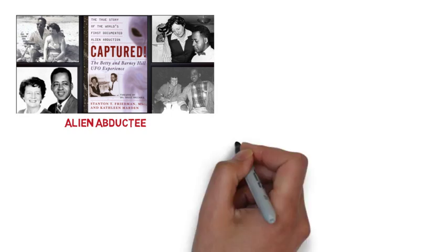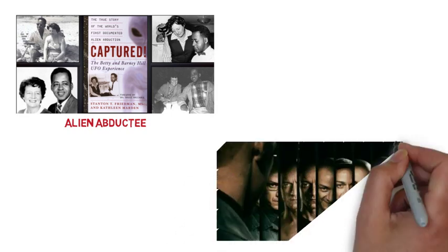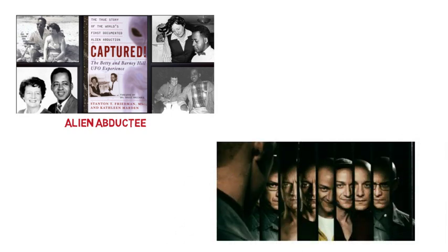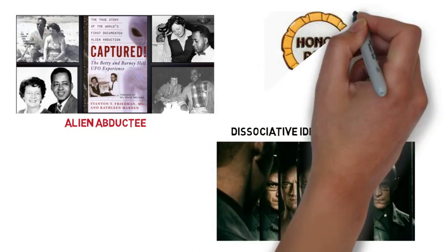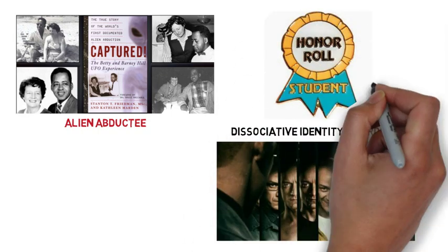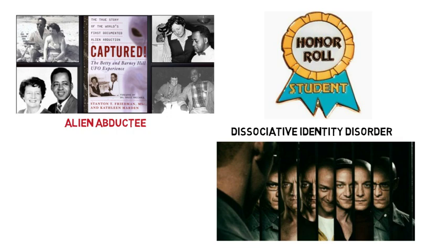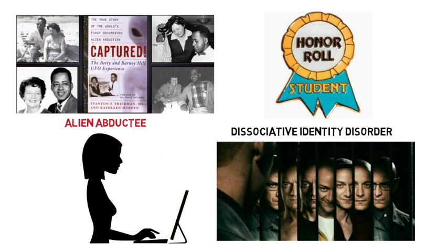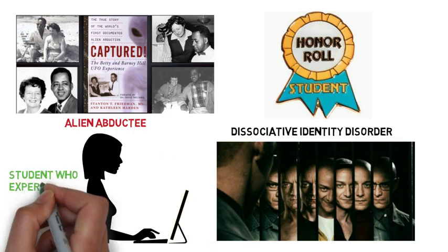By the way class, you can also cover any phenomenon that you like. It can be from rare situations like a self-claimed alien abductee or a person with dissociative identity disorder, to something that is completely ordinary like first-year students or students who are experiencing anxiety in school.